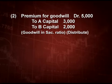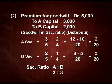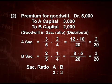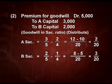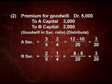As we did in the last class, sacrificing ratio is old ratio minus new ratio. Old ratio: A is 3/5, B is 2/5. New ratio: A is 2/4, B is 1/4. Sacrifice: taking LCM of 20 — A's sacrifice is 2/20, B's sacrifice is 3/20. So the sacrificing ratio is 2:3. We will distribute 5,000 rupees in ratio 2:3, which is their sacrificing ratio.